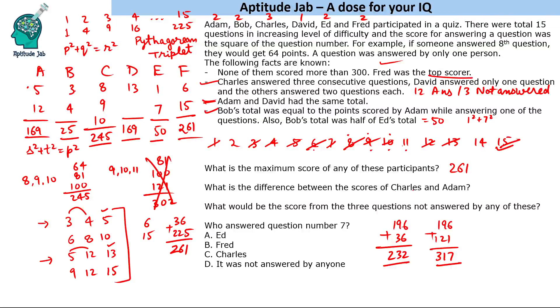What is the difference between the scores of Charles and Adam? Charles scored 245 and Adam scored 169, so the difference is 76.